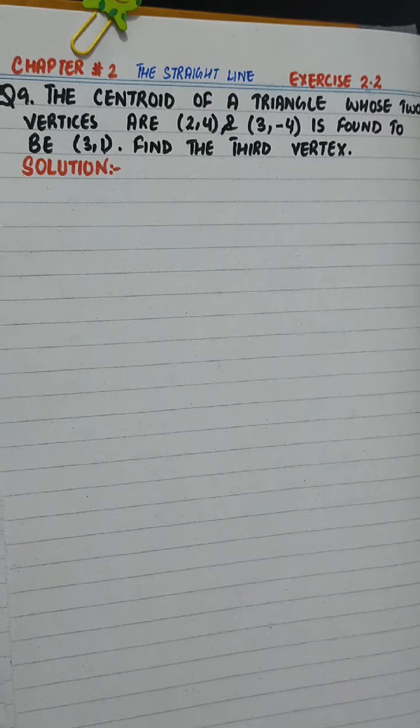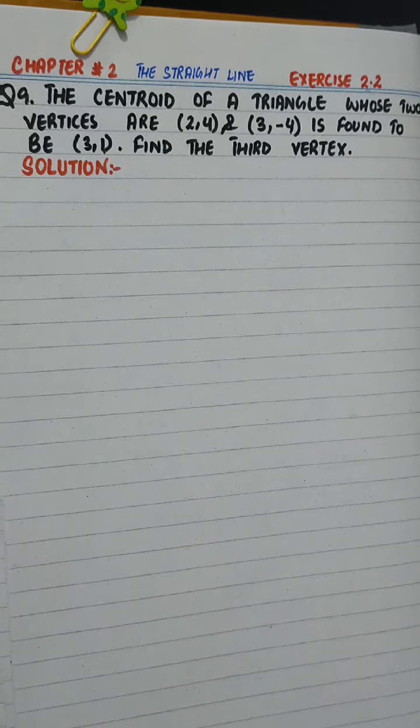The question is: the centroid of a triangle whose two vertices are (2,4) and (3,-4) is found to be (3,1). Find the third vertex.